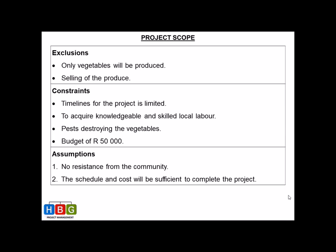Let's look at exclusions. We include exclusions in the project scope because they explicitly tell us what we are not going to do in the project. In this case, we are only going to produce vegetables — not any fruit or trees. And the selling of the produce is not going to happen. It's a community vegetable garden: we produce vegetables and supply them to the community. This way, stakeholders know not to expect anything outside what's listed.